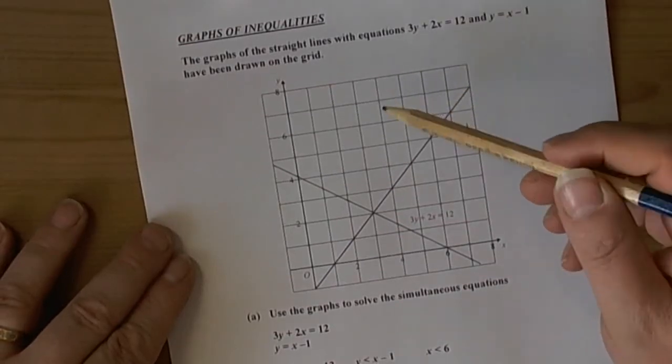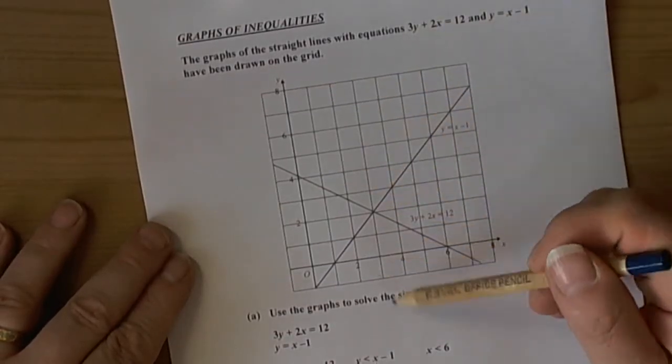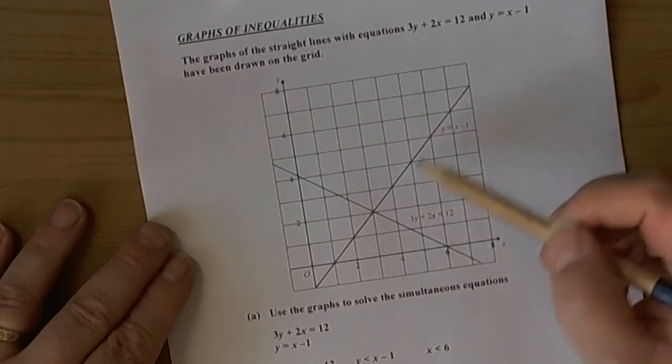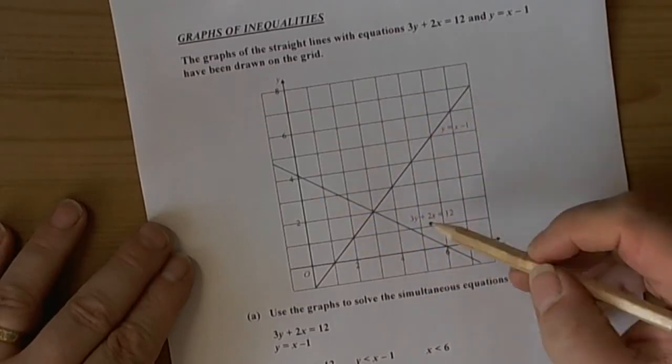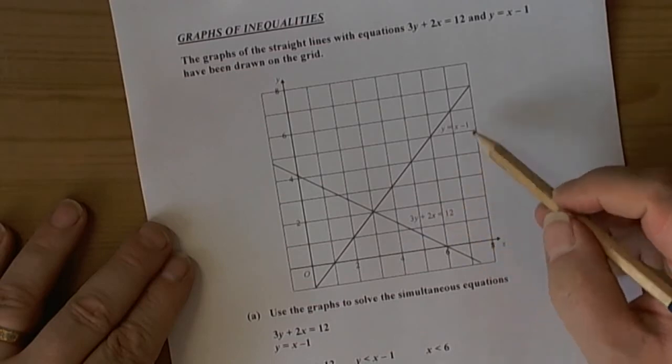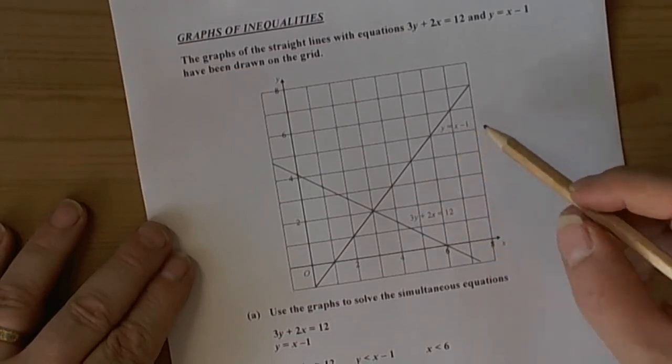This question is about the graphs of inequalities. We can see they've already drawn two lines for us: 3y plus 2x equals 12, and y equals x minus 1.